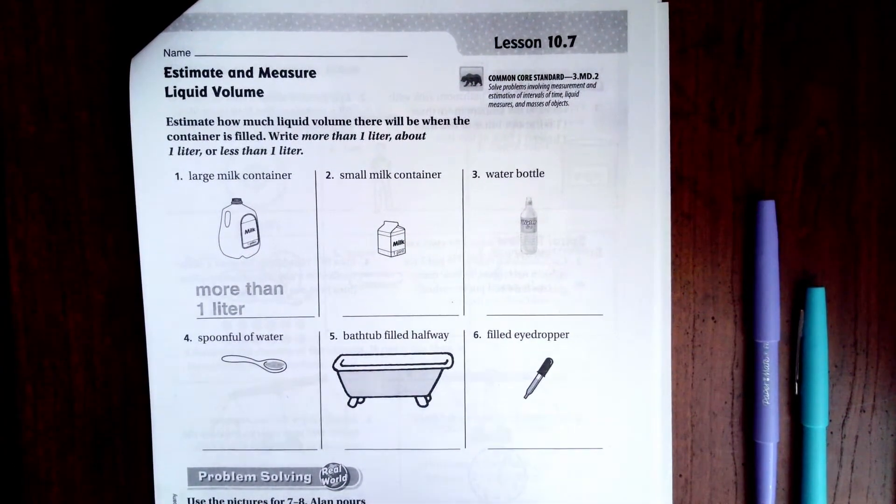Hi guys, welcome to third grade chapter 10 lesson 7. We're going to go ahead and get started with number two. It says to estimate how much liquid volume there will be when the container is filled. Write more than one liter, about one liter, or less than one liter.